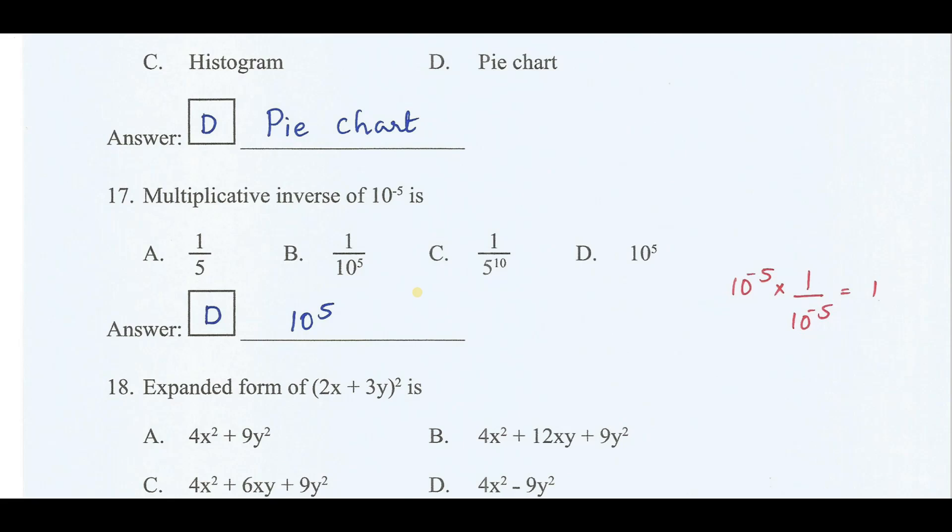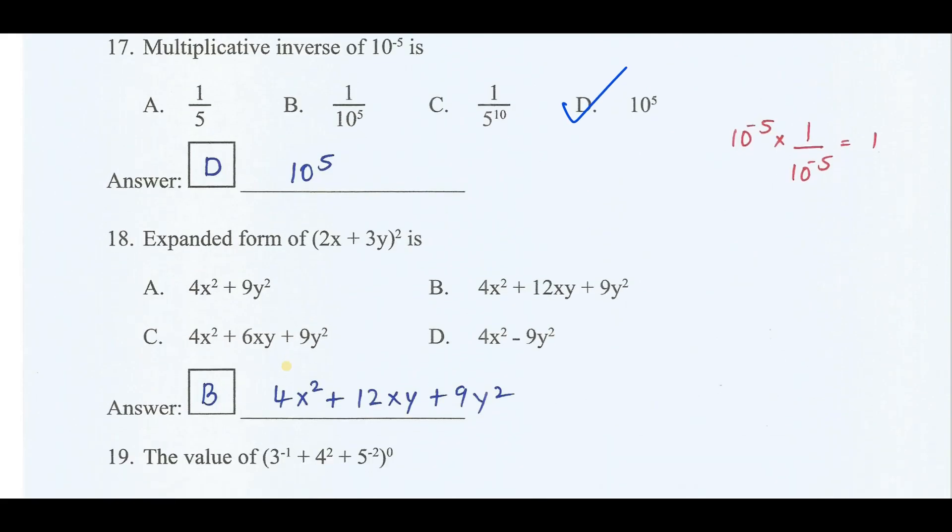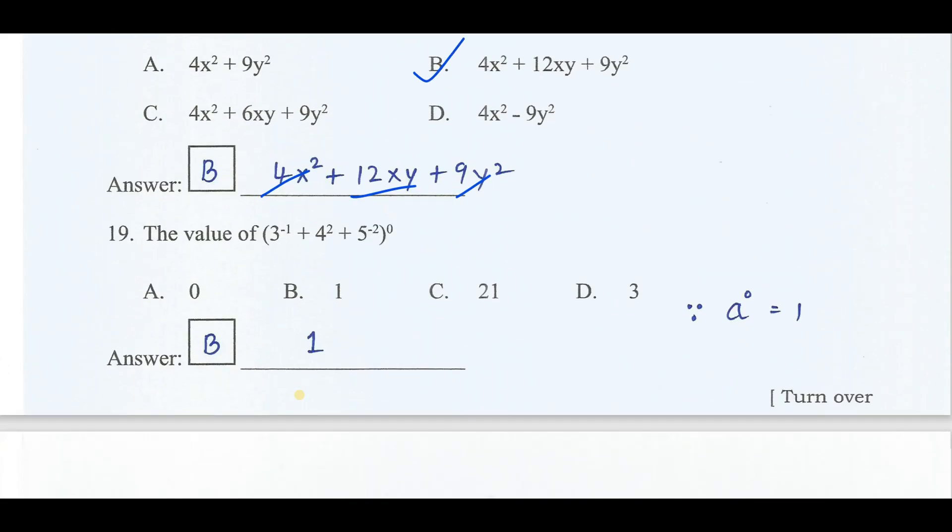The graph that represents the relationship between whole of a circle and each part is pie chart. The multiplicative inverse of 10 power minus 5 is option D, 10 power 5. If you multiply, you should get the multiplicative identity. So 10 power minus 5 into 10 power 5, what you get is 10 power 0, which is equal to 1, which is a multiplicative identity. Therefore the correct answer is option D. The expanded form of (2x+3y)² is a² + b² + 2ab. That is the correct answer is option B. Anything to the power of 0 is 1. Therefore the value of this to the power of 0 is 1. The correct answer is option B.